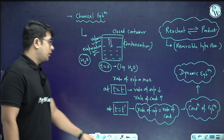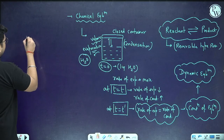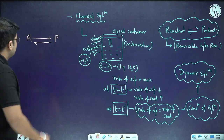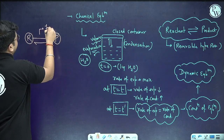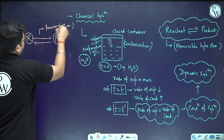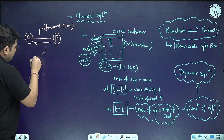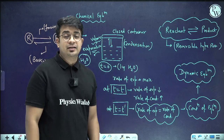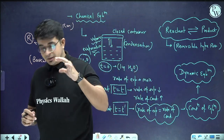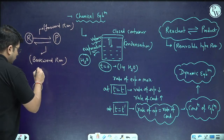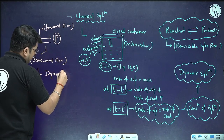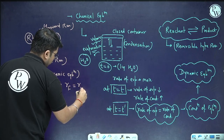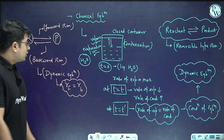Whenever reactant is converting into product and product is converting back into reactant, the part where reactant converts into product is your forward reaction, and the part where product converts back into reactant is your backward reaction. For the condition of dynamic equilibrium, the rate of forward reaction becomes equal to rate of backward reaction — that is the most important condition for the equilibrium state.